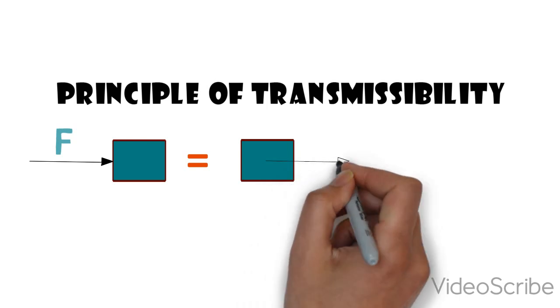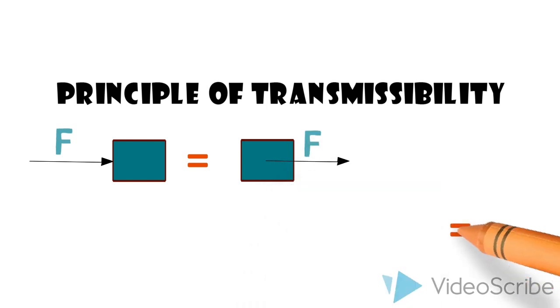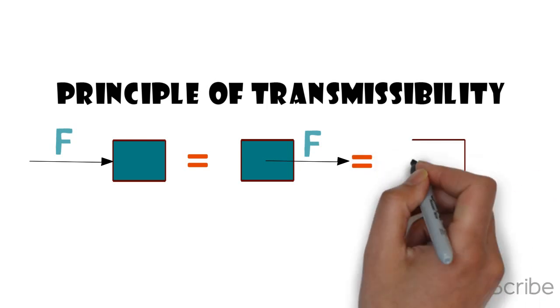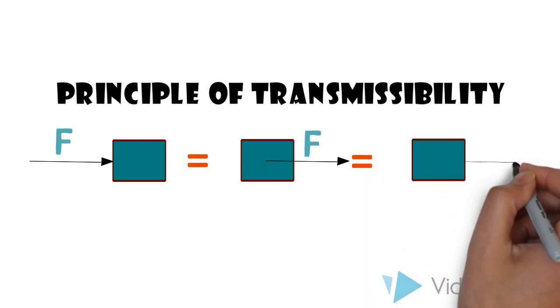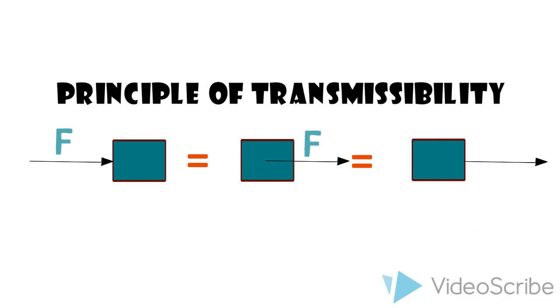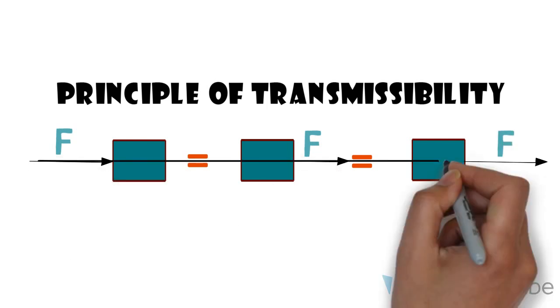This pushing force F can also be replaced with an equivalent force pulling on the right side of the block. All three of these diagrams are equal as long as the force is along the same line of action.